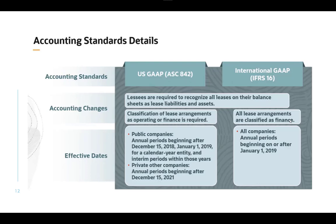IFRS 16 requires all qualified leases to be classified as finance leases and recognized on the balance sheet as lease liabilities and right-of-use assets. ASC 842 qualified leases can be classified as finance or operating leases. Operating leases under ASC 842 require leases to be recognized on a straight-line basis over the lease term. IFRS 16 has been in effect since January 1, 2019, and companies using ASC 842 should begin using the new standards now.